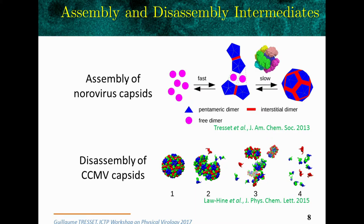We also studied the disassembly of CCMV capsids. Starting from full empty capsids, we observed that the capsids break in two pieces — two big pieces, almost half a capsid each — and these two pieces break into smaller pieces made of roughly 16 dimers, and then we end up with three dimers in solution.